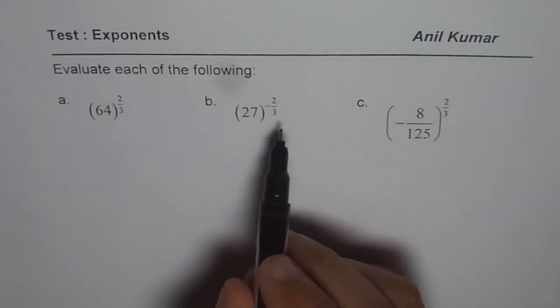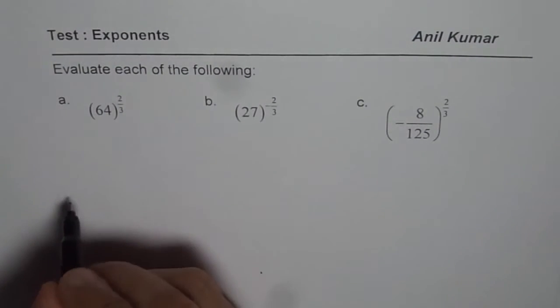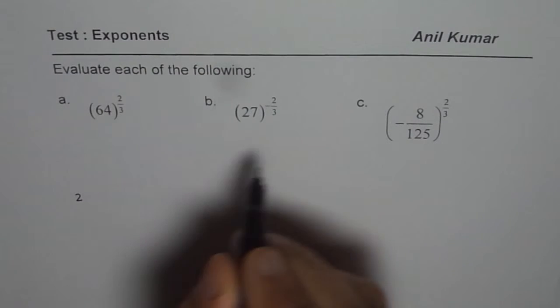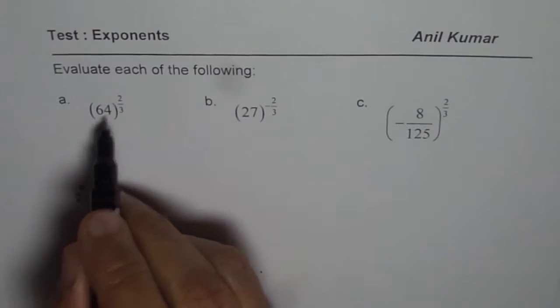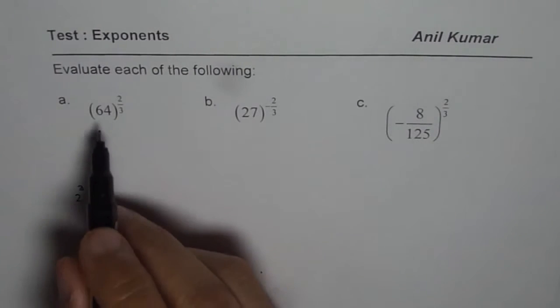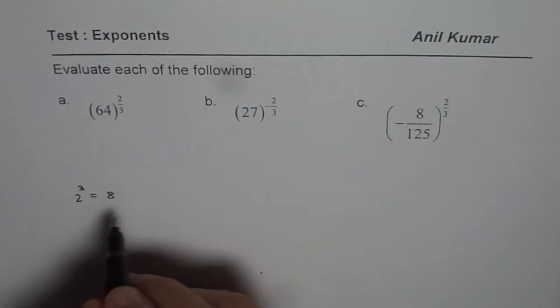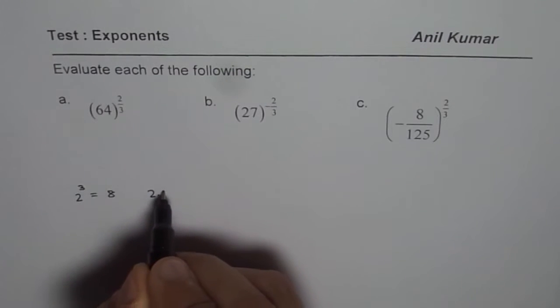To begin with, let us look into the powers of 2. We have 2 to the power of 3 is 8. 64 could be written as 2 to the power of what? 2 times 2 is 4, 4 times 2 is 8.